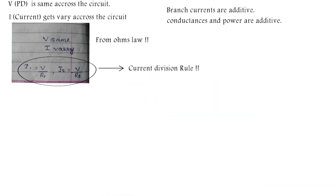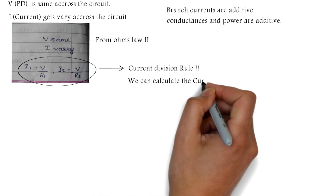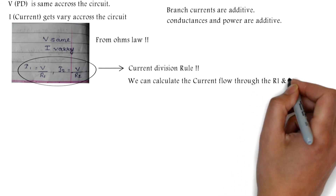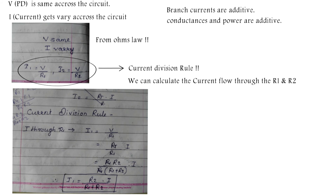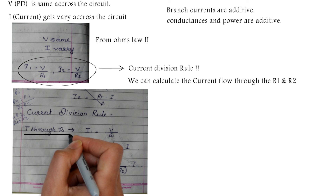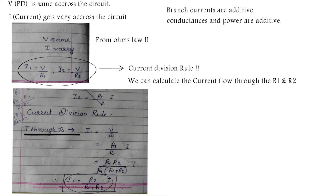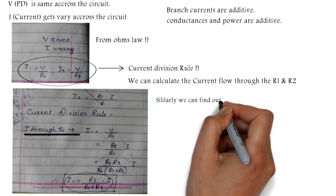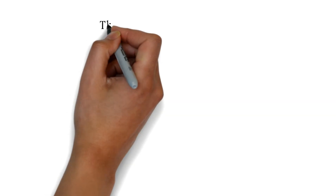In a parallel connection we apply the current division rule to calculate the current flowing through each resistance. By applying the current division rule, I1 (current through R1) equals V over R1. Following the steps, I1 equals R2 divided by (R1 + R2) times I. Similarly, we can find the current flowing through R2.